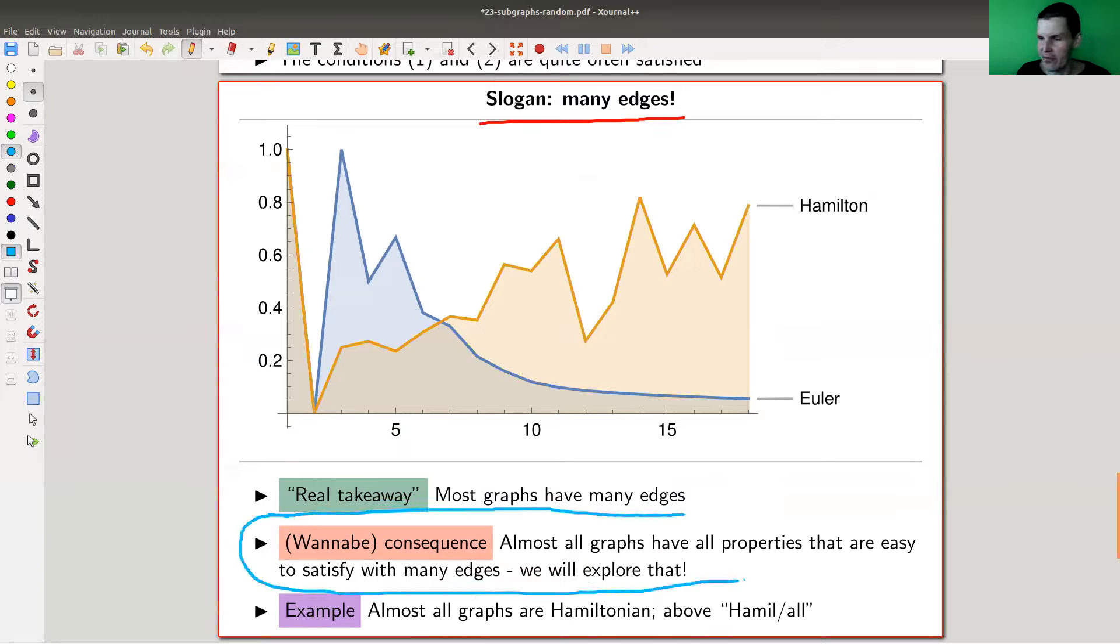So the real takeaway is exactly that. And if you think about that a little bit, I have this wannabe consequence here which we are going to explore in future videos, that properties that are easily satisfied with many edges essentially almost all graphs should have that property. And on the other hand, if the property is really difficult to satisfy with many edges, then almost no graph should have that property.